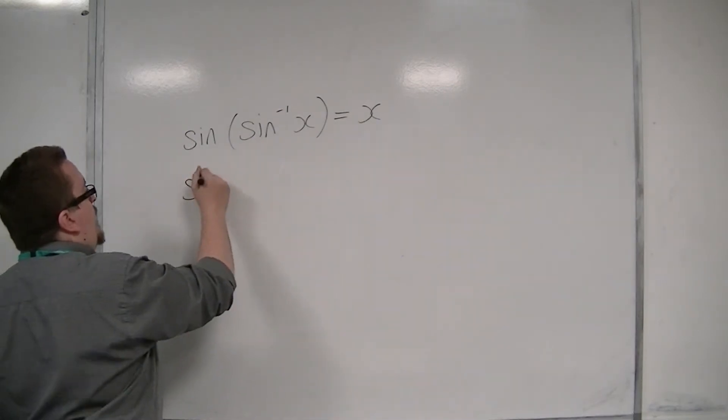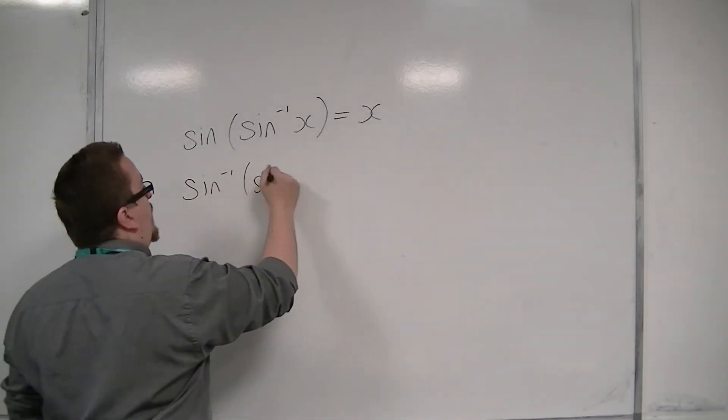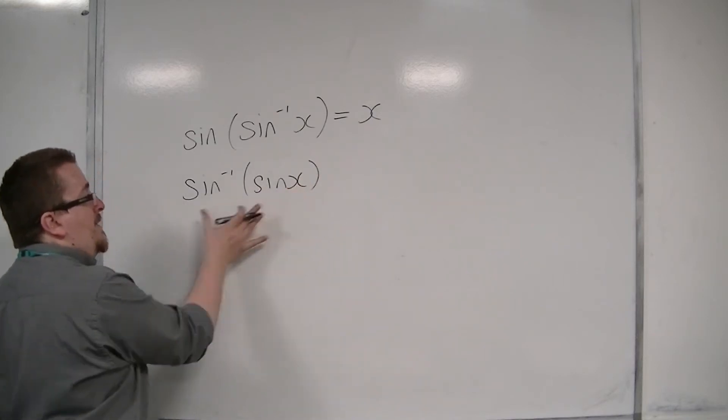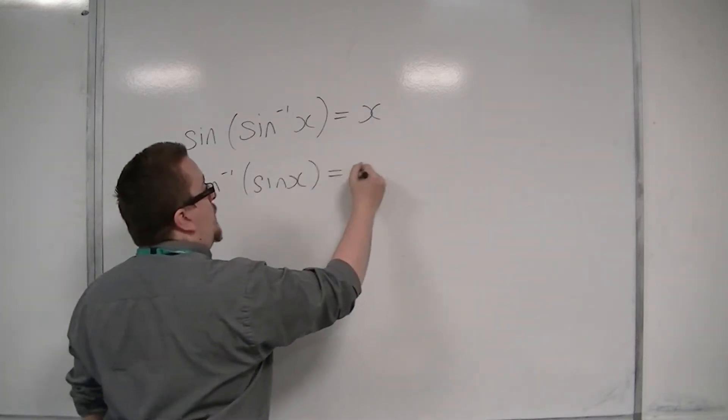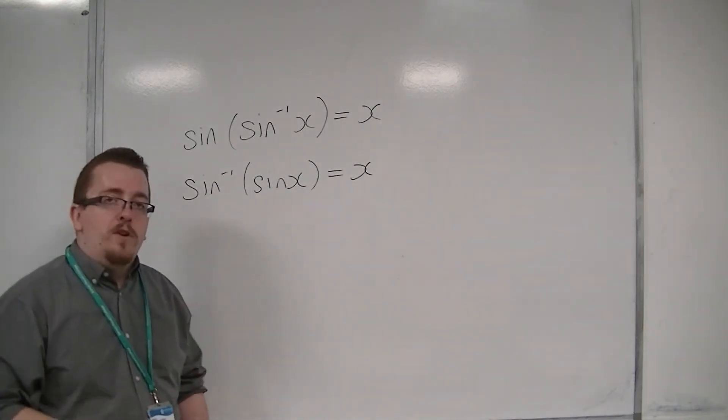And round the other way, you could have sine minus 1 of sine of x. So if you form sine of x first, and then invert sine, you will arrive back at x, for exactly the same reason.